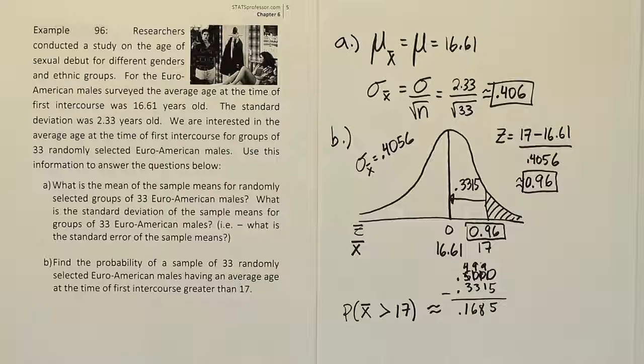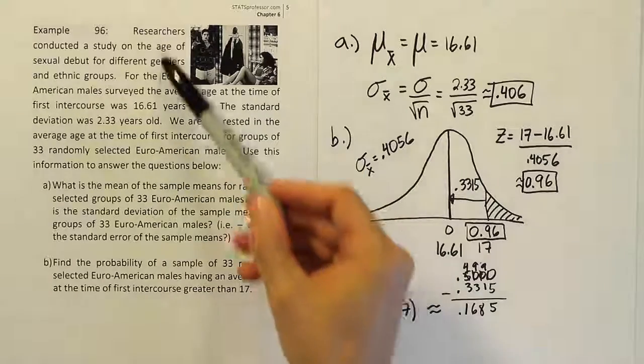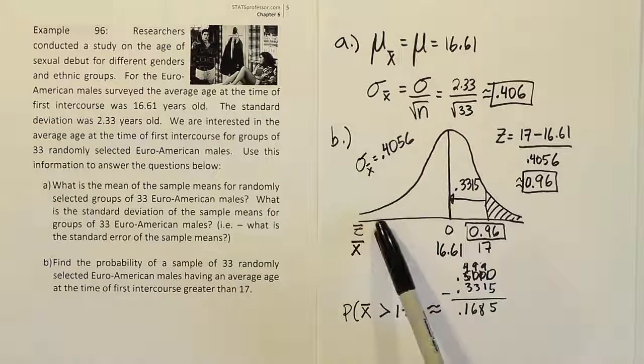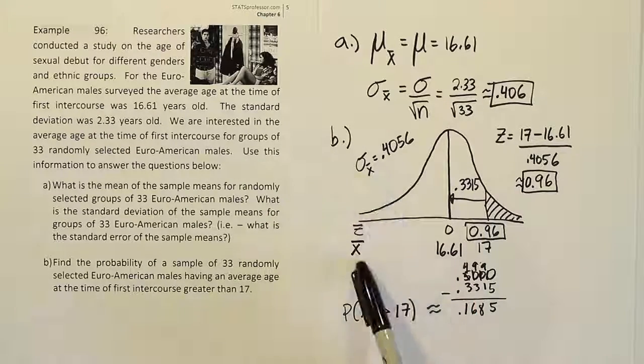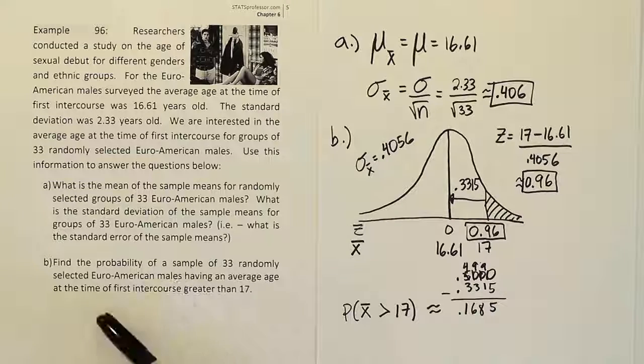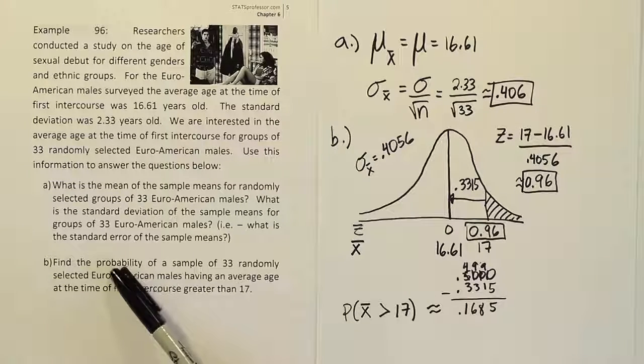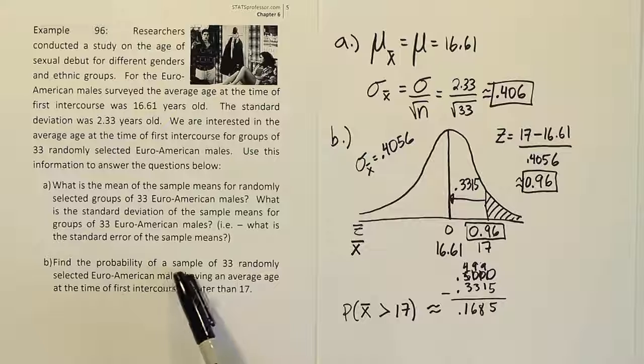Hopefully that makes sense, and just remember that we didn't have to have the phrase normally distributed anywhere in this problem because we had a sample size large enough to assume the bell curve, as long as we were talking about X̄. So when you read the sentence, when you're working out the problem on the exam, look for key words, the probability of a sample. Here we have a sample.